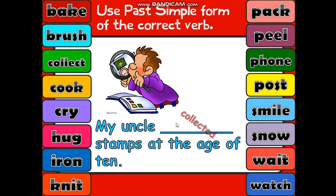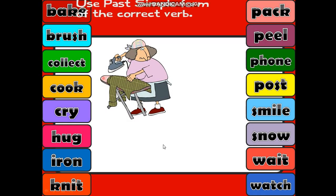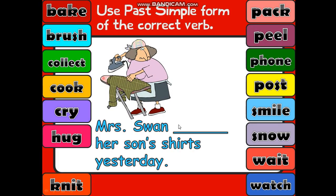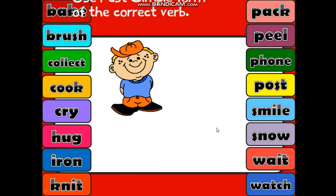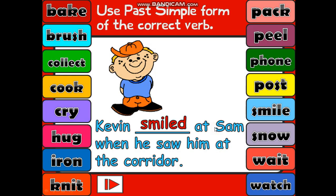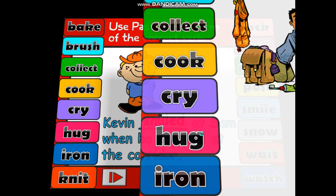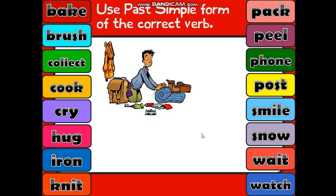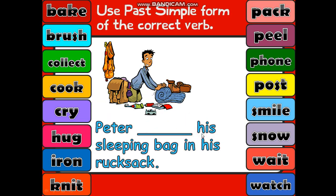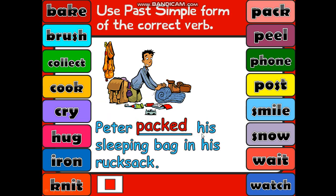My uncle collected stamps at the age of 10. Mrs. Swan ironed her son's shirt — we added 'ed'. Kevin smiled — we have 'e' at the end of the verb so we added only 'd'. Kevin smiled at Sam. And the last one: Peter packed his sleeping bag.